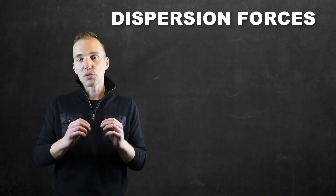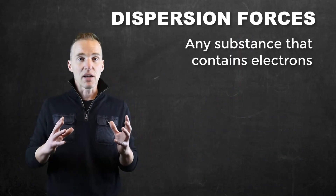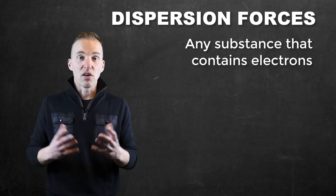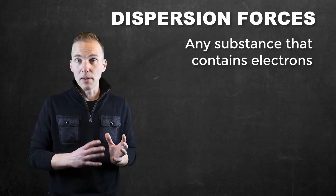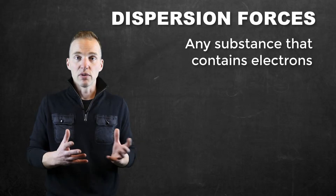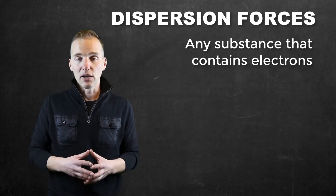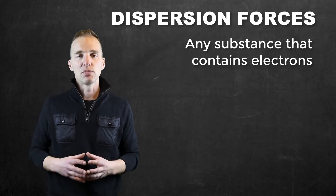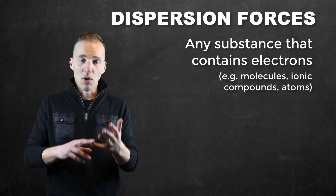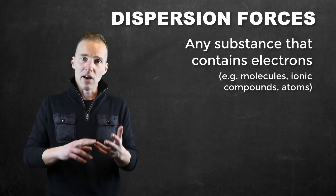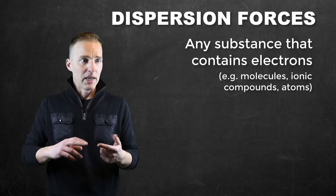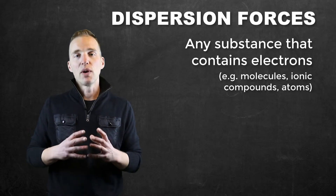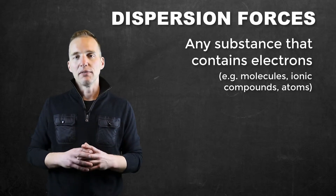Dispersion forces exist in any substance that has electrons, so this can occur even in ionic substances as well. Even though we call these intermolecular forces, anything with an electron is going to have some degree of dispersion force — whether it be a molecule, an ionic compound, a metal, an element — anything that has electrons is going to have some degree of dispersion.